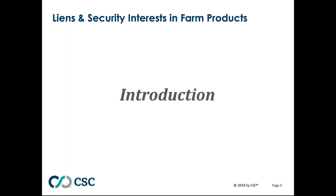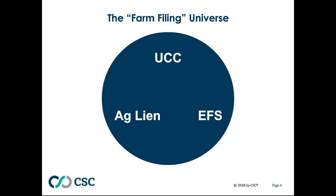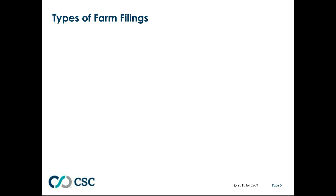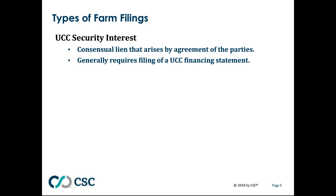As a threshold issue, what exactly are we talking about when we're talking about farm filings? Well, farm filings, as that term is often used, can mean one of three things. It can mean a UCC financing statement filed in connection with a security interest, an agricultural lien which may also involve a financing statement, or an effective financing statement — which has nothing to do with the UCC, at least not directly — which would be filed under federal law. So there are three types of records that could be filed in relation to a farm filing. The first is a UCC security interest — a consensual lien, a voluntary lien granted by the debtor — which generally will require the filing of a UCC financing statement.